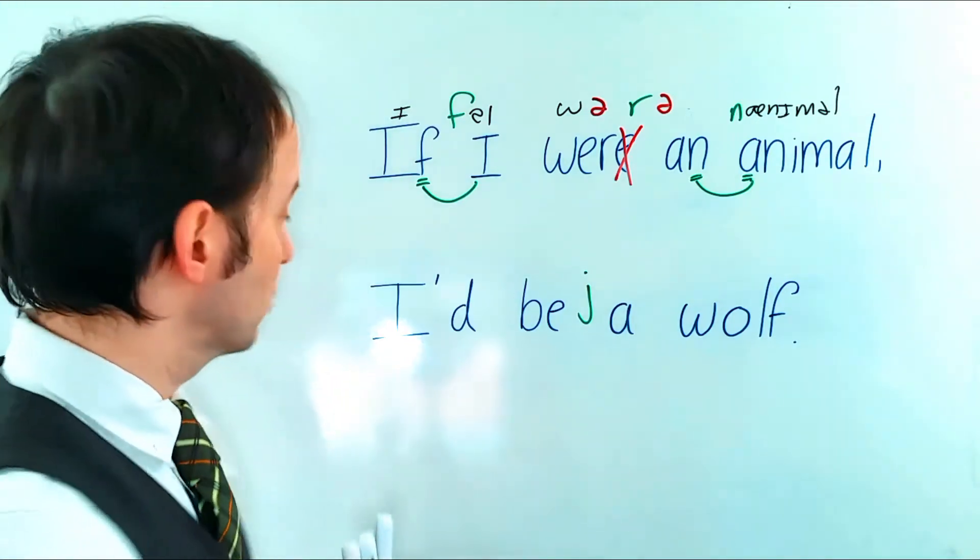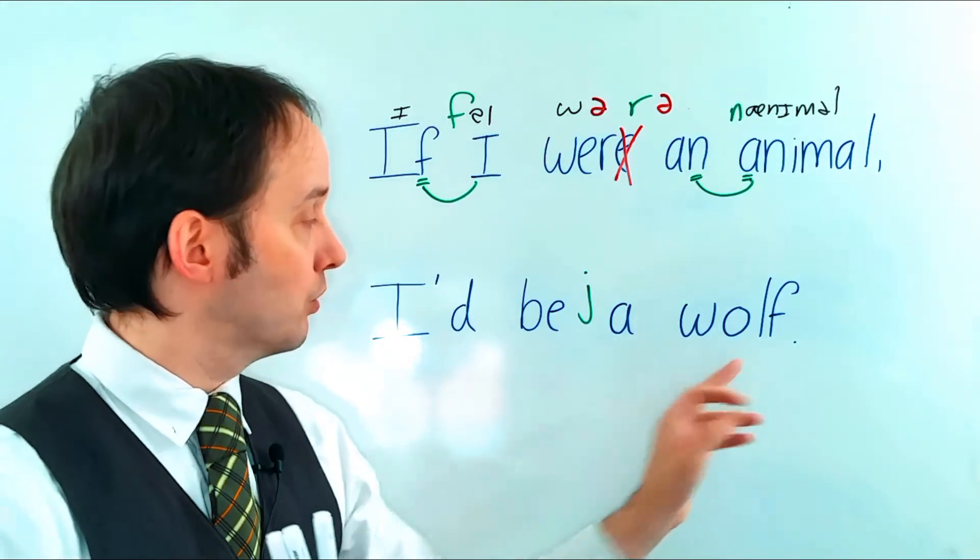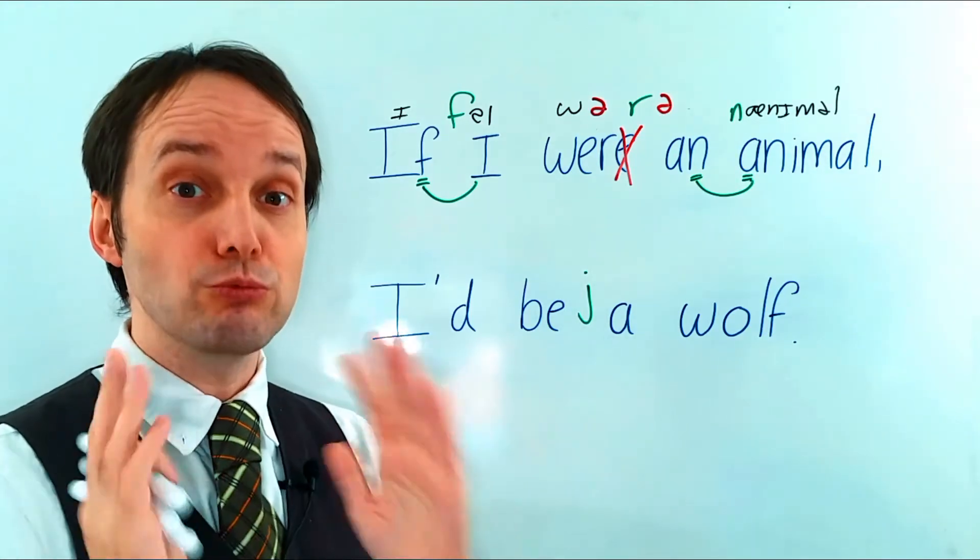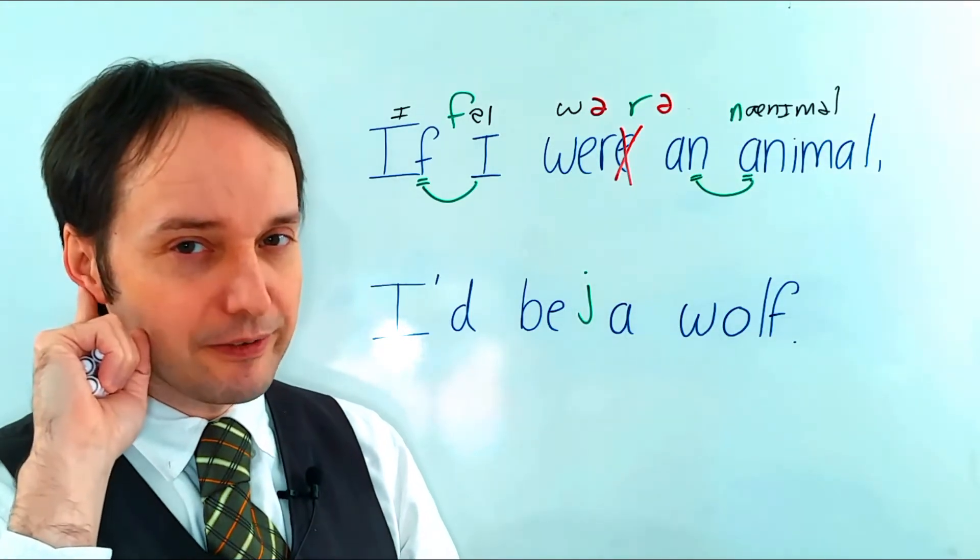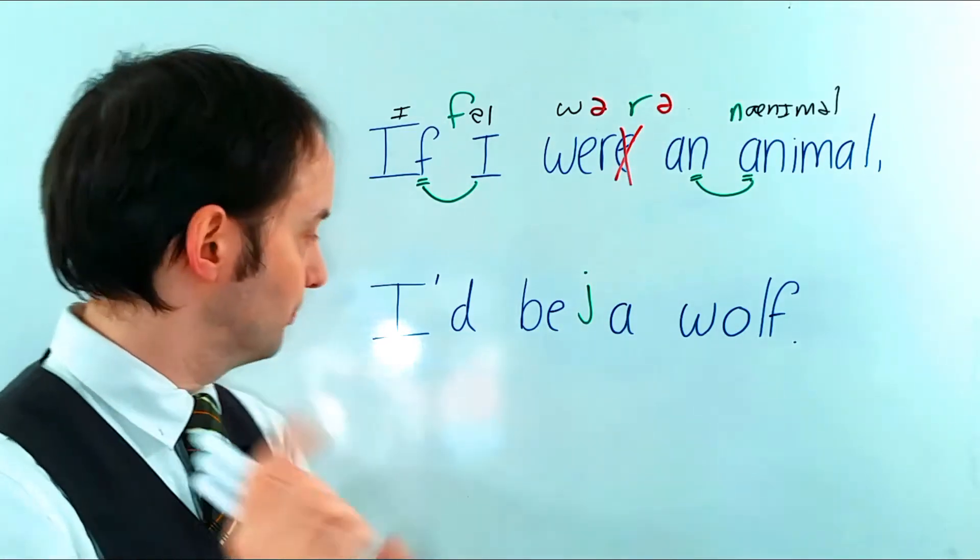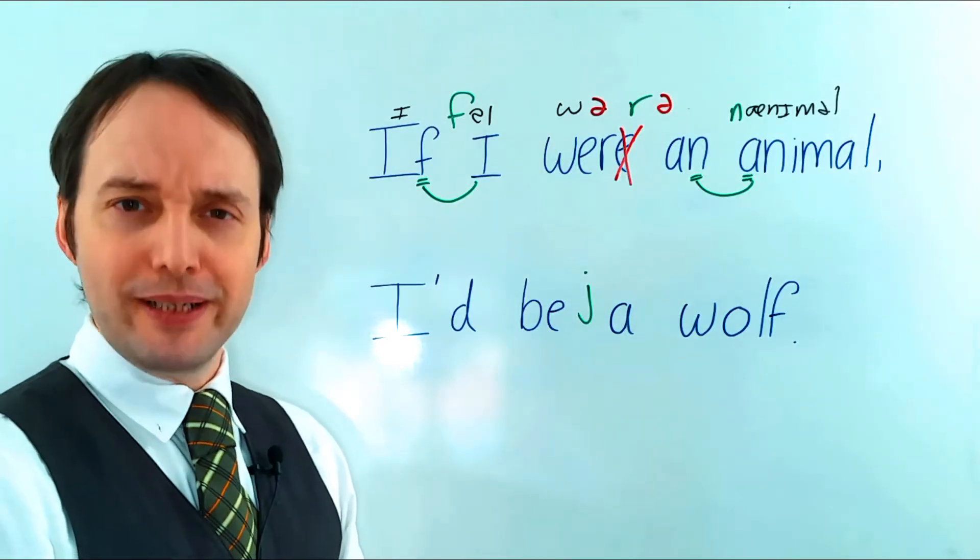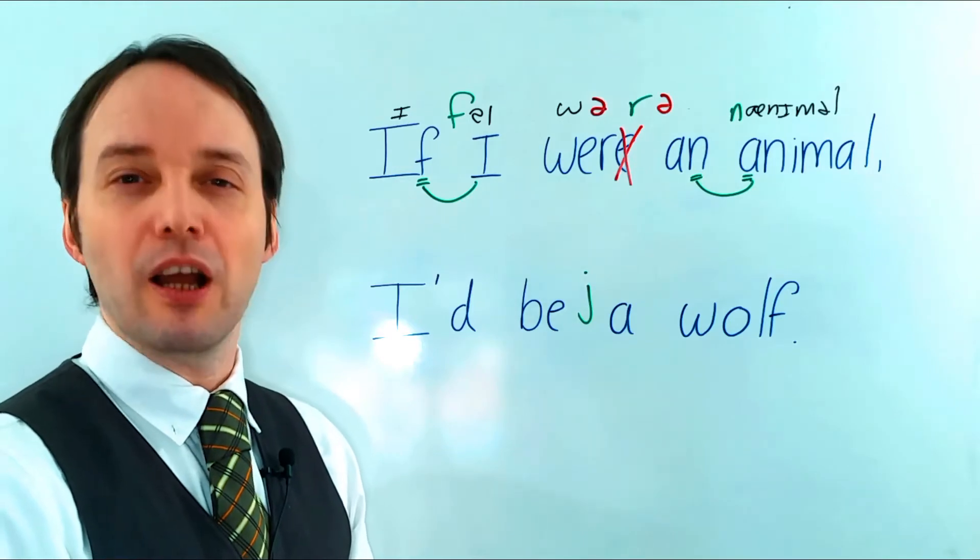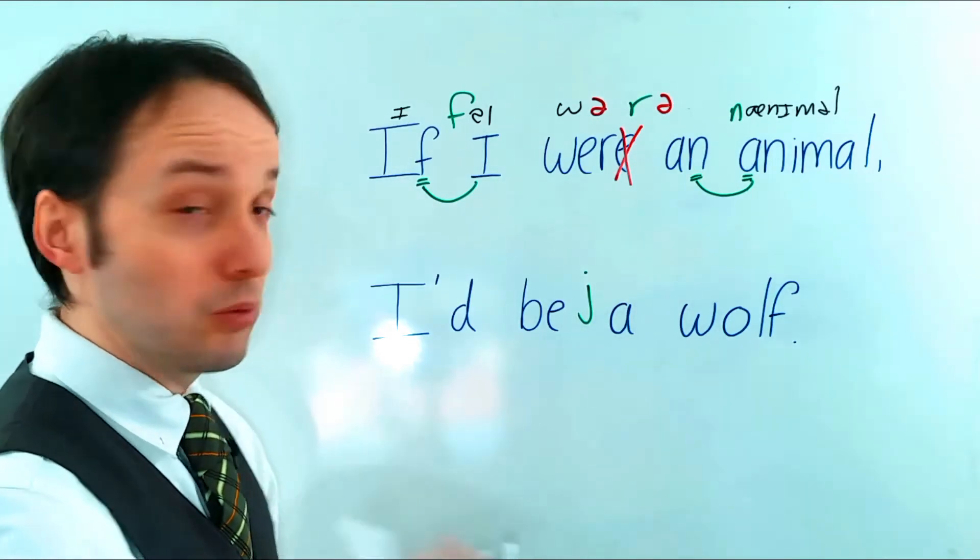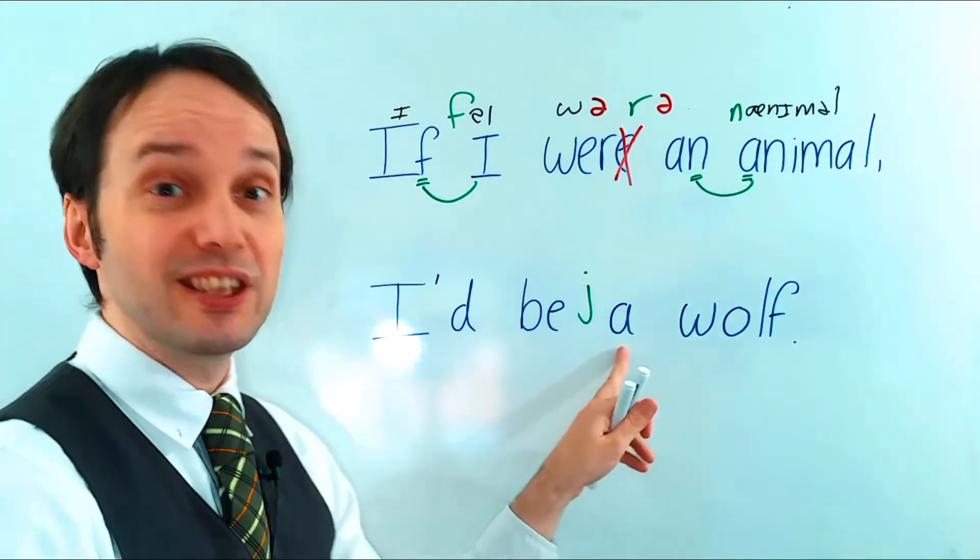Okay, and what about the main clause then? I'd be a wolf. I'd be a wolf. Okay, but I'm going to say this really naturally. Listen very carefully. Try to identify any schwas. I'd be a wolf. I'd be a wolf. Yeah, good. So one very important one is 'a'.